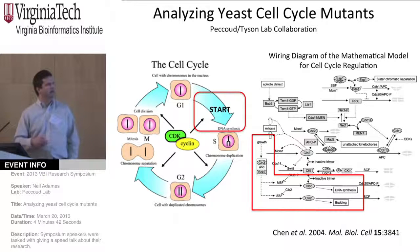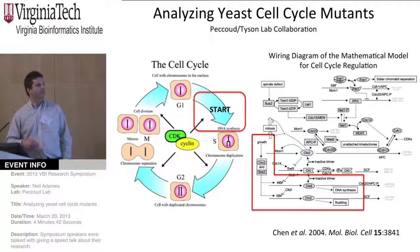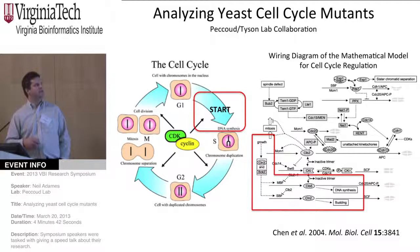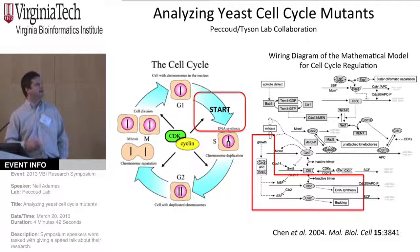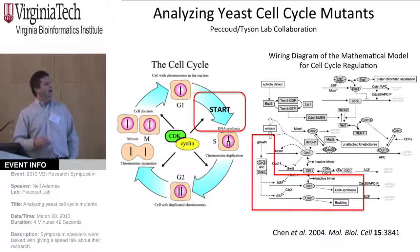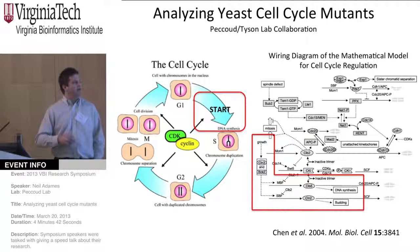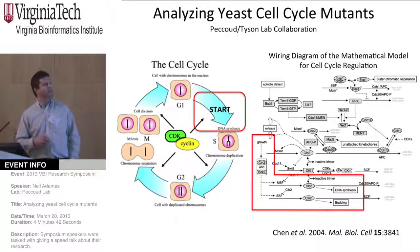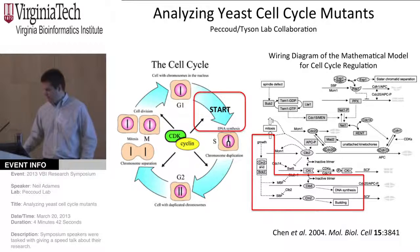The main part of the model that we're testing right now is the G1S transition, because that's a fairly easy one to test just based on gross morphology of the cells. As Logan mentioned, if you slow the G1S transition, the cells get bigger, and if you speed through the transition, the cells tend to be smaller.